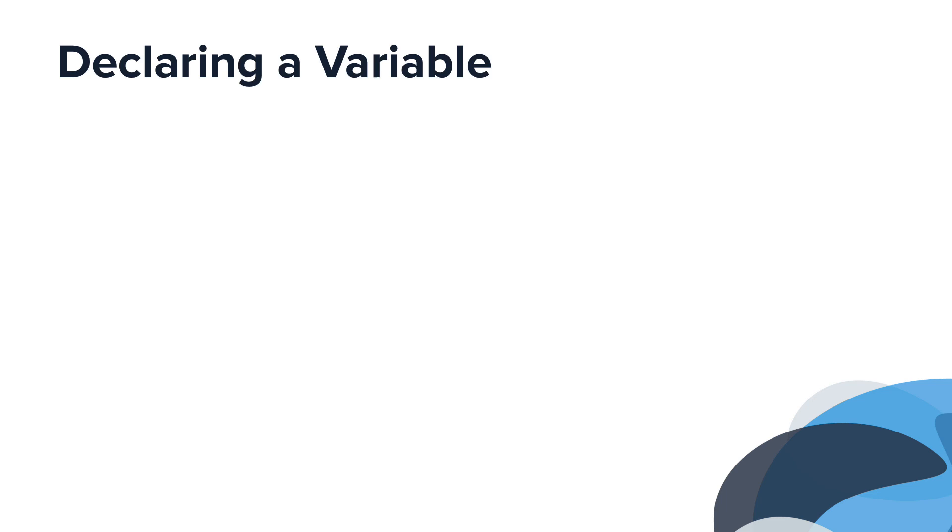Now that you know about the different data types, let's create a variable. In order to create a variable, you must declare it. This is what it looks like to declare a variable in Java. Let's break it down.